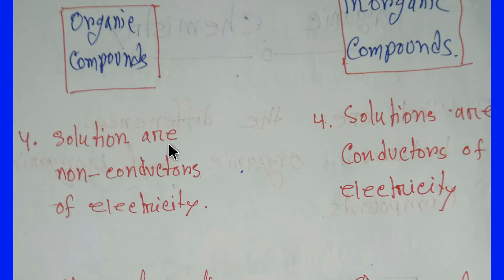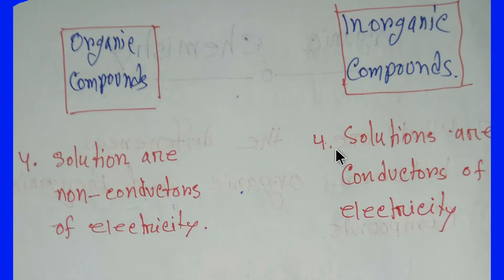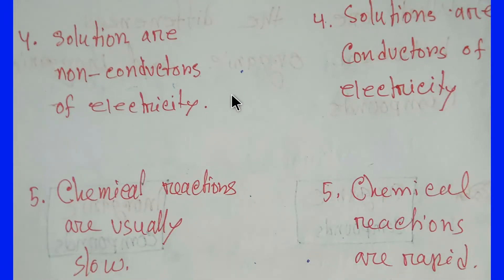We have to know some other points to differentiate between these two compounds. Organic compound solutions are non-conductors of electricity — that is, the solution of an organic compound doesn't carry any electricity. On the other hand, inorganic compounds are conductors of electricity — their solutions can carry electricity.